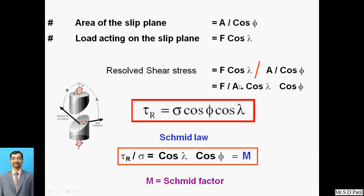Here F/A is nothing but sigma, the tensile stress. So the resolved shear stress tau r equals sigma·cos phi·cos lambda. This is Schmid's law. The Schmid factor m equals cos lambda·cos phi, which is the ratio of shear stress to tensile stress. This shows how the applied forces are resolved into shear stress on the slip system.